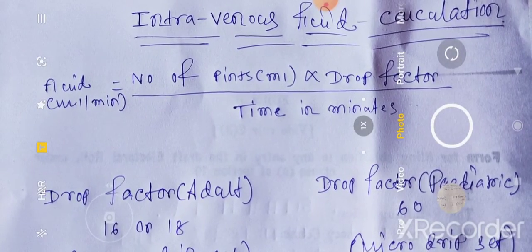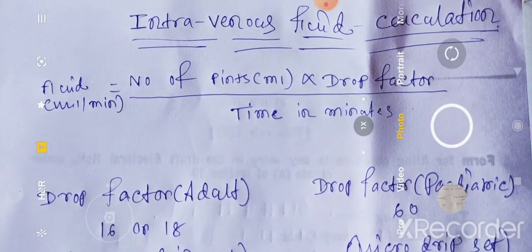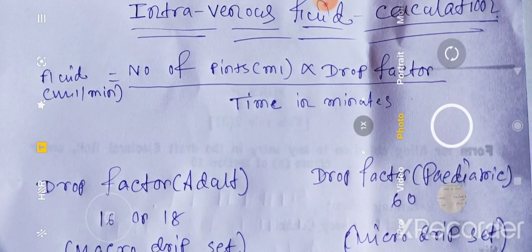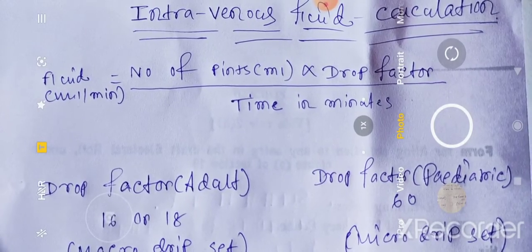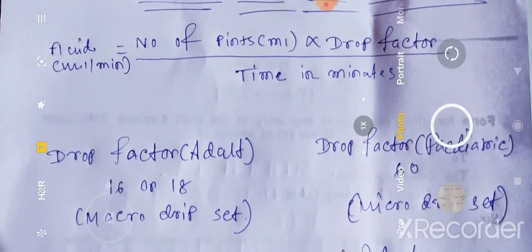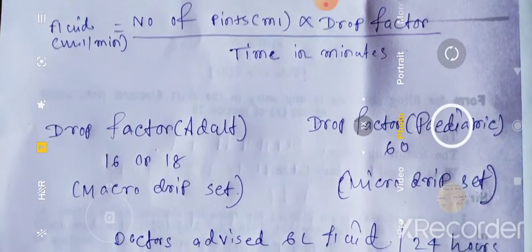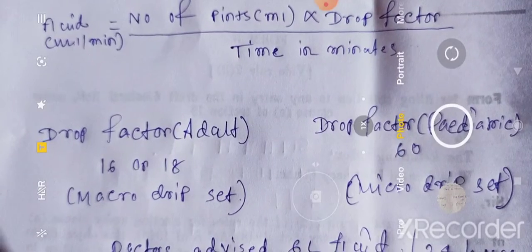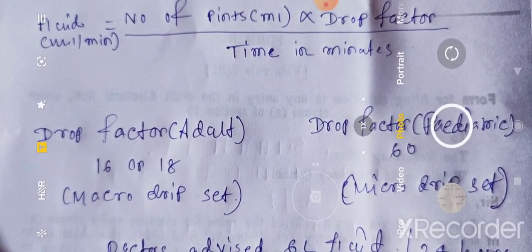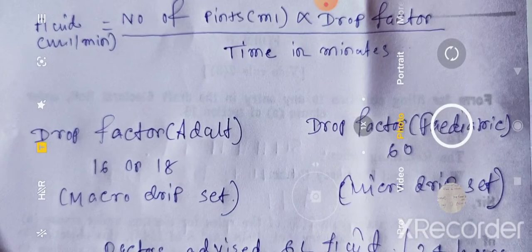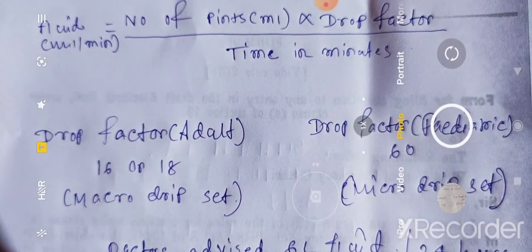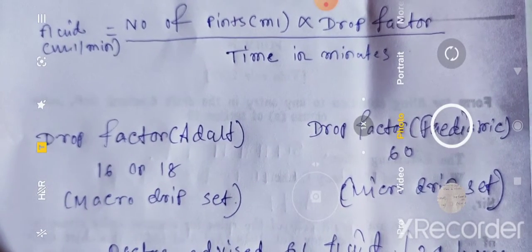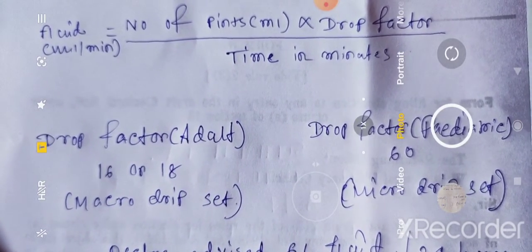Drop factor for adult and drop factor for pediatric is completely different. Adult के लिए drop factor generally 16 और 18 होता है। किसी-किसी drip set में adult के लिए drop factor 20 भी रह सकता है — उसके पीछे वो लिखा रहेगा — और हम लोग उसी हिसाब से calculation करेंगे।